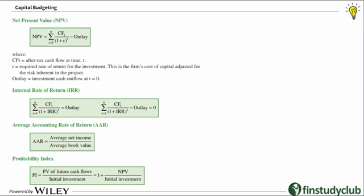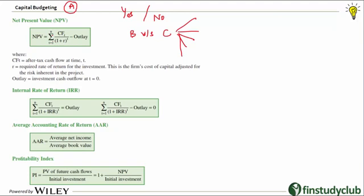Starting with capital budgeting — one of the numerically oriented readings in corporate finance. Out of six readings, there are about two very critical A-category readings: capital budgeting and cost of capital. In capital budgeting we're trying to evaluate whether a particular capital expenditure should be done or not — a yes or no question. To answer that, we compare the benefit with the cost, and this comparison happens with five different techniques.